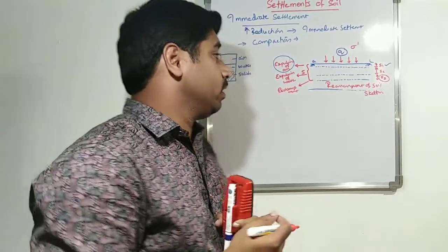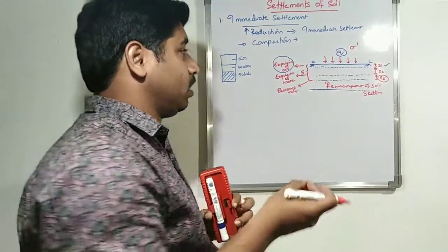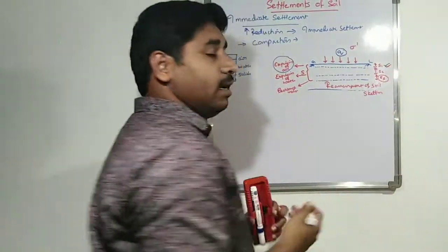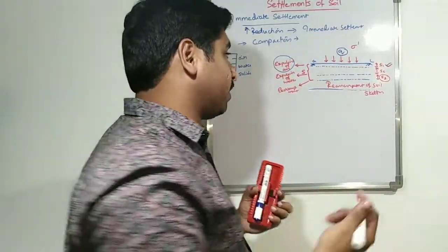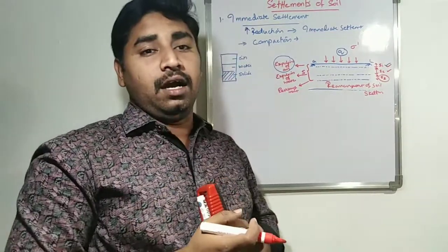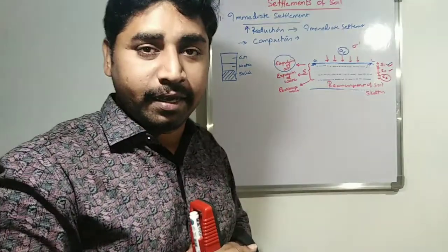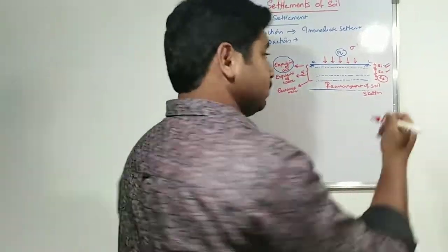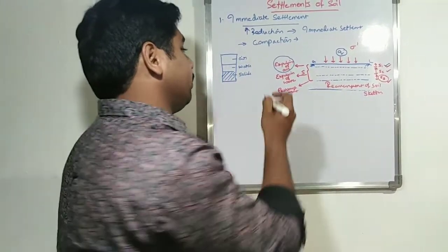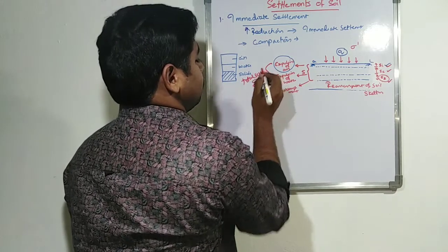In this way, the soil undergoes reduction in volume due to the immediate superimposed load, which is referred to as immediate settlement. Later on, due to expulsion of pore water pressure, it undergoes primary consolidation settlement. After completion of 100% consolidation, due to rearrangement caused by constant effective stress acting on the soil particles, secondary consolidation settlement takes place. All three together are referred to as total settlement in soil.